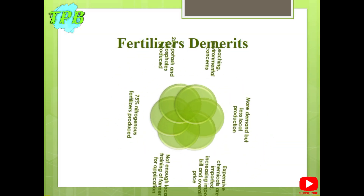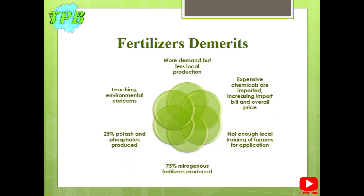Fertilizers also have some demerits. They have high demand but low local production, resulting in a gap in availability. The expensive chemicals imported to produce chemical fertilizers increase the import bill and overall price, making them out of reach for many small-scale farmers. There is also not enough local training for farmers on the application of these chemical fertilizers, and they might end up injuring themselves by using them improperly.